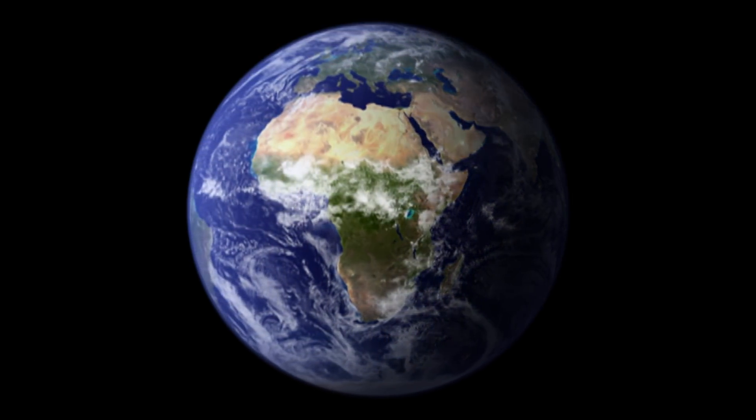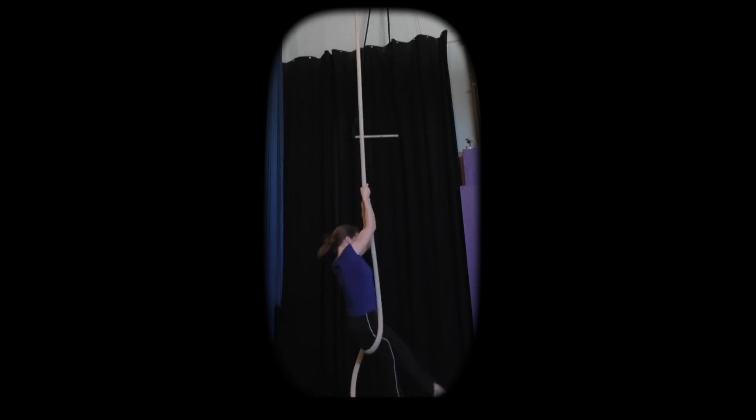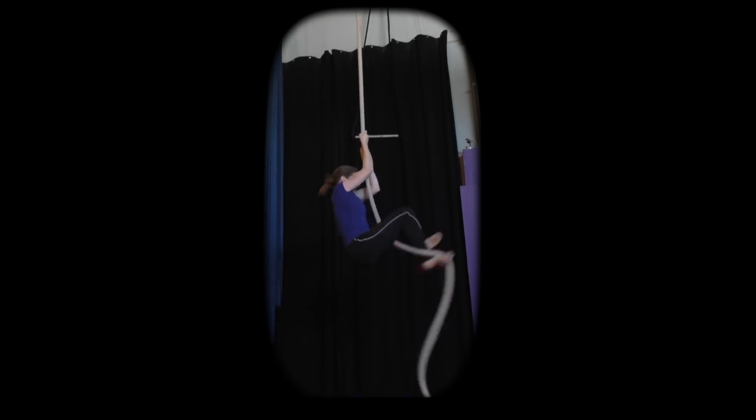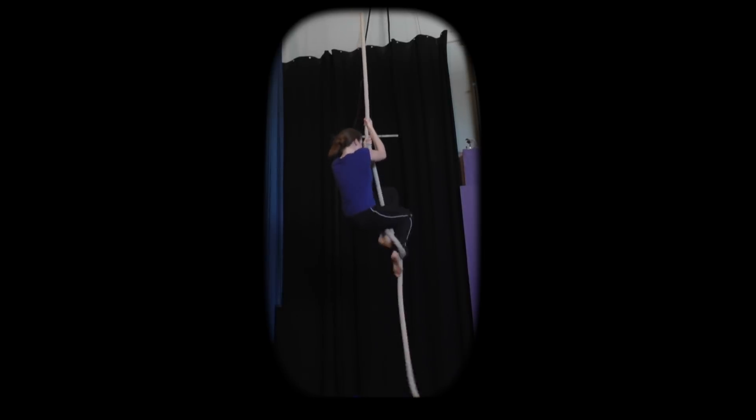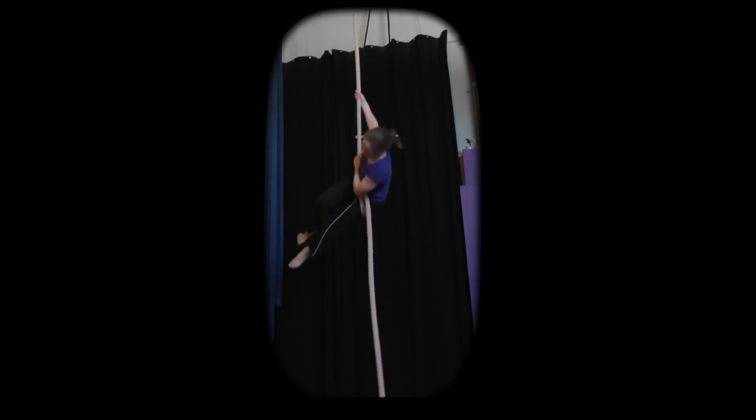But this warming doesn't mean every year is going to be hotter than the one before. Even though temperatures are rising generally, some years are still cooler than others. To demonstrate this, my height on the rope represents global temperature. The higher I am, the higher the temperature. Notice how I'm climbing up and down. This is because some years are cooler, and some are warmer.